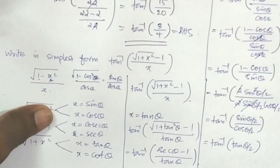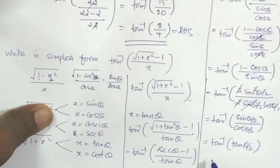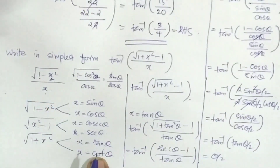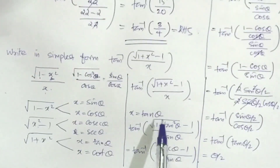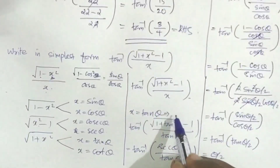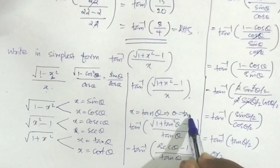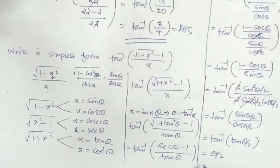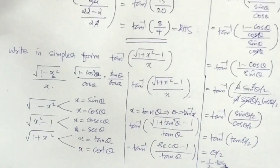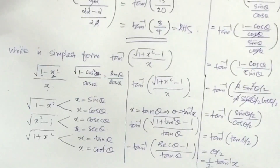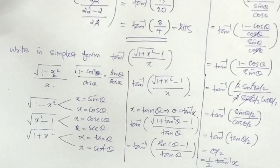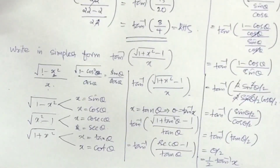Tan inverse of tan(theta/2) equals theta/2. Since x equals tan theta, we have theta equals tan inverse x. Therefore the answer in simplest form is (1/2) tan inverse x.